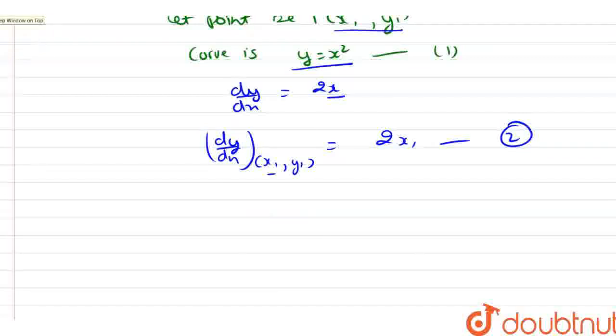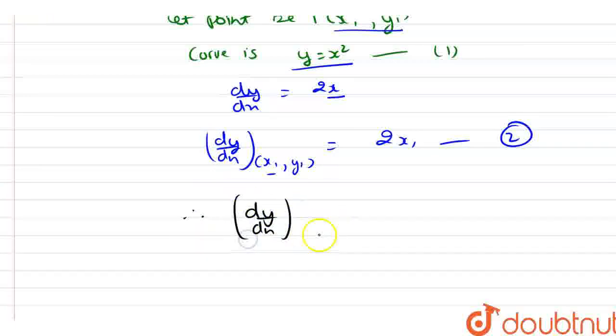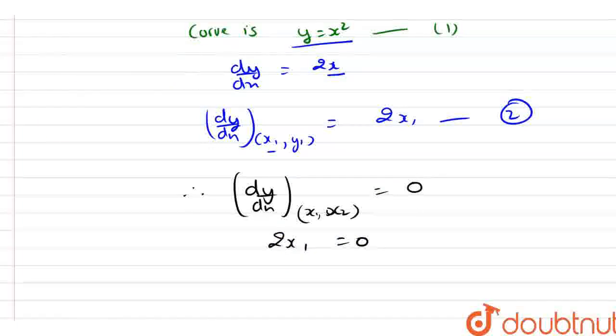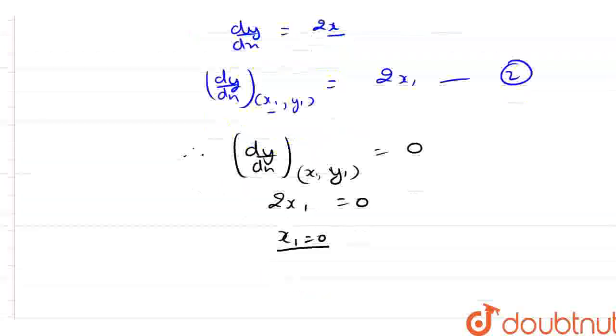Now, since the tangent to the curve is parallel to the x-axis, from here dy/dx at (x1, y1) equals 0. Now, from here we have the value 2x1 equals 0. Let me correct it here, this is not x2, this is y1. Now, from here x1 is also equal to 0.